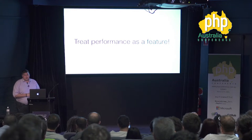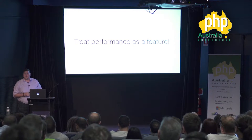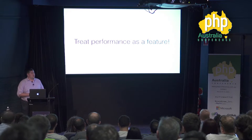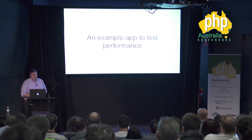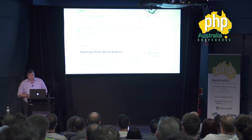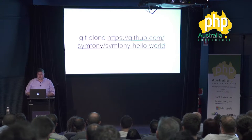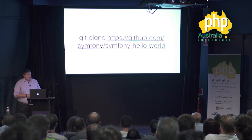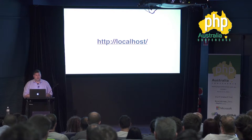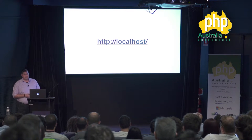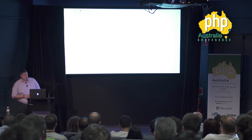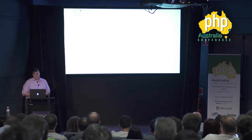The core message is: treat performance as a feature. I'm going to go through a bunch of different tools to load test applications on both the server side and the client side. Let's start with an example application. Because I'm a big Symfony fan, I like to use the Symfony Hello World edition, optimized for benchmarking. You can get started on GitHub by cloning symfony/symfony-hello-world. It comes with a script to optimize it, and you can run it on localhost.